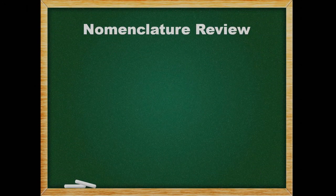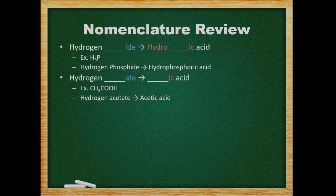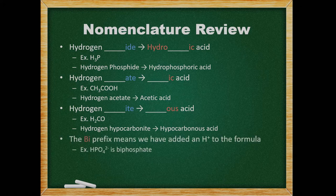Let's do a quick nomenclature review for acids and bases. If the acid is hydrogen something-ide, then we change it to hydro something-ic acid. Hydrogen phosphide is an example — since it is a hydrogen-ide acid, we can call it hydrophosphoric acid. If the acid ends in -ate, we lose the hydrogen part and change the ending to -ic. Hydrogen acetate, or acetic acid, is an example. Endings of -ite we change to -ous. For example, hydrogen hypocarbonate becomes hypocarbonous acid. The bi- prefix means we have added a proton to the formula.